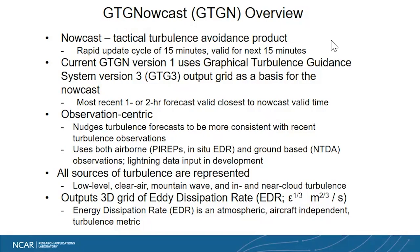Operationally right now, the first version is using the GTG3 output — the most recent one or two hour forecast output valid closest to the Nowcast valid time. It then takes the most recent observations to nudge that short-term forecast from GTG. So it currently uses airborne observations of turbulence — PIREPs and in-situ EDR data from aircraft — as well as radar-derived turbulence from the ground-based NEXRAD radars. In the future, the next version of GDGN will use lightning data, potentially satellite information, and other airborne information.